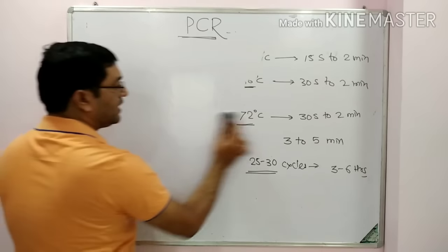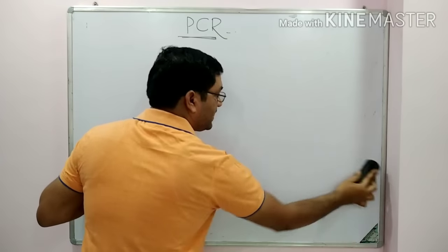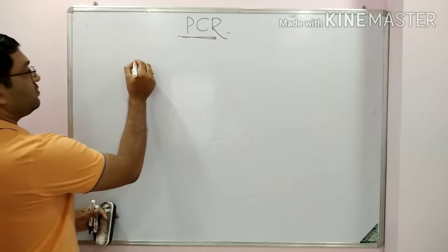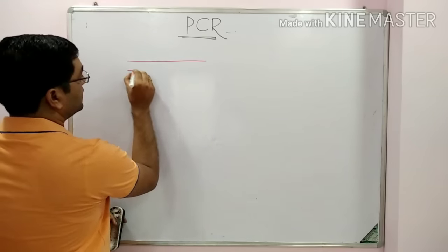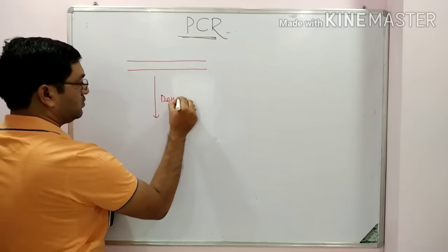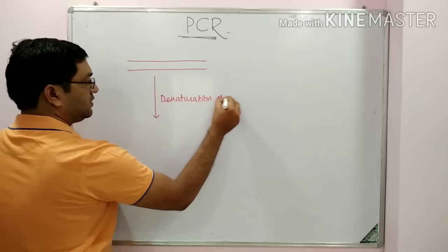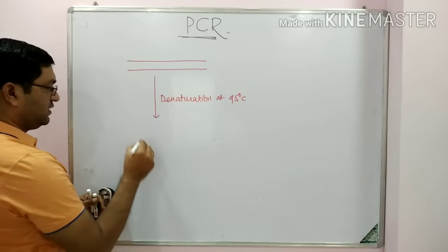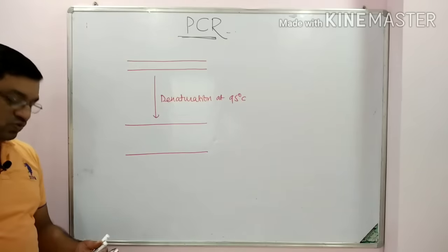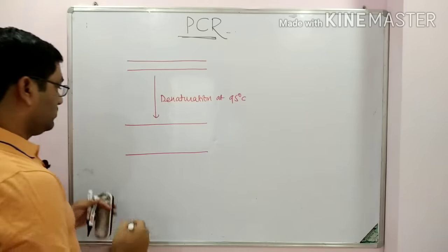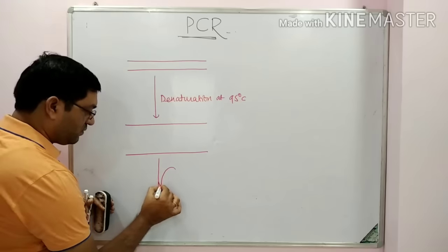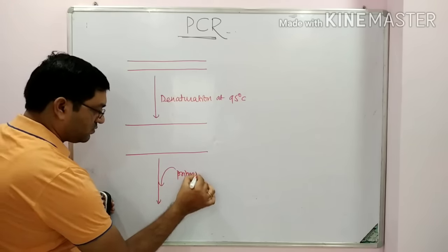Denaturation, annealing, and extension are done in a thermal cycler or PCR machine. If this is a target DNA sequence, by denaturation at 95 degrees centigrade, these two strands will separate from each other.